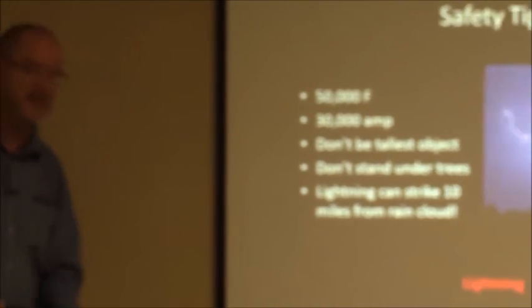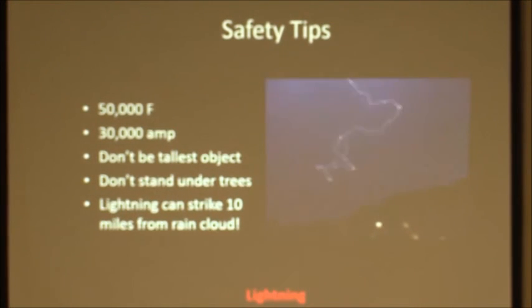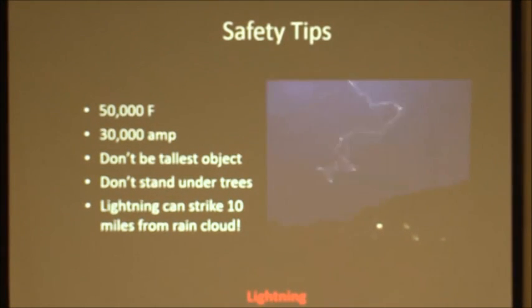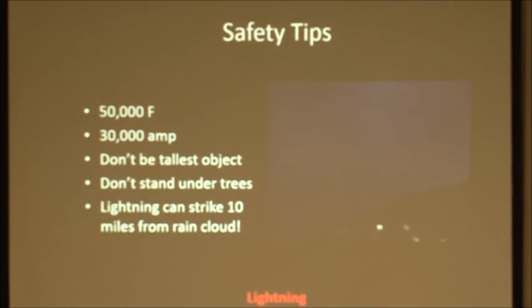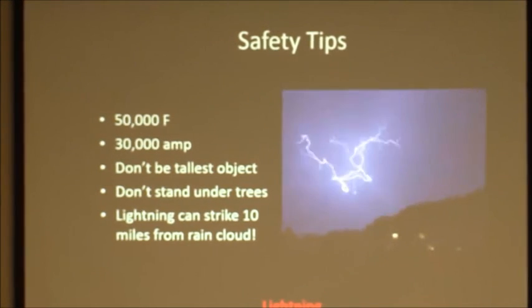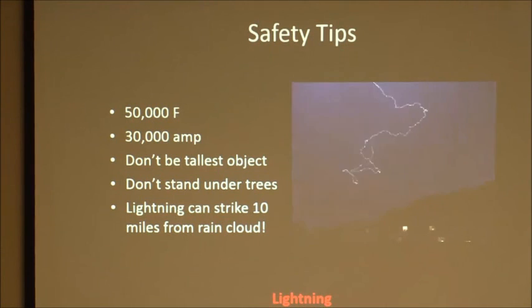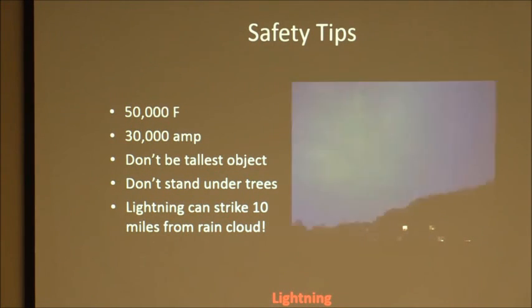Lightning can definitely hit trees — we hear a lot of stories about people ducking underneath trees because they don't want to get wet, and then lightning hits the tree and strikes them as well. The other big point related to lightning is that it can strike pretty far away from where the rain is falling. Some lightning comes out of the base of the clouds, and other lightning comes out of the top of the clouds or the anvil section. When it does that, it can travel very far from where rain is falling.